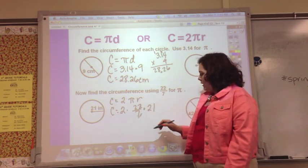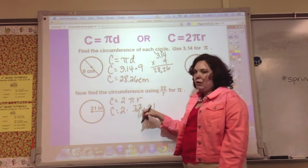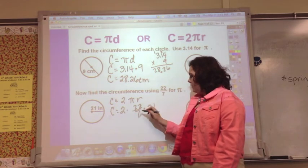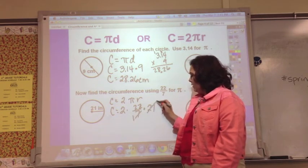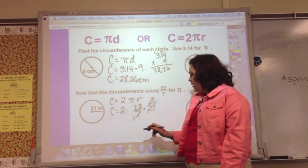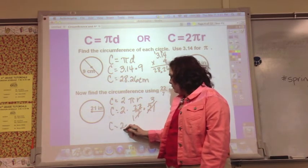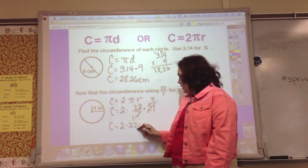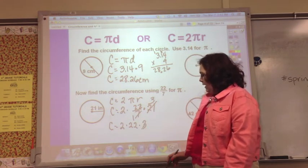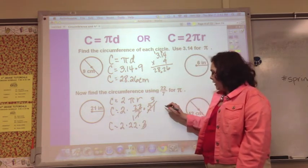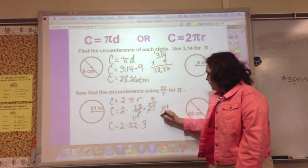The interesting thing here is I can cross cancel. 7 goes into 7 one time and 7 goes into 21 three times. So now I have C equals 2 times 22 times 3, and that's going to be 44 times 3.